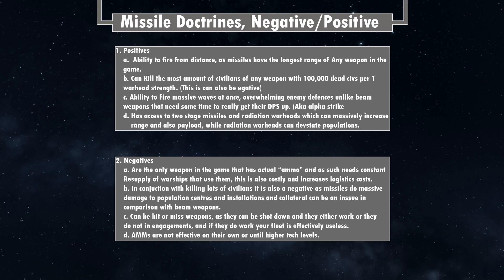Missiles allow you to fire from considerable range. Positive B: missiles can kill the most civilians of any weapon — 100,000 dead civilians per warhead — which can also be a negative. The biggest missile can kill 300 million aliens, which is very significant. So they're extremely effective at that, though obviously if you're trying to capture a planet you don't want to blow up all the installations.